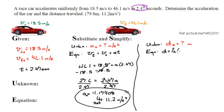I don't know what displacement is, but I do know velocity final is 46.1 plus 18.5. That quantity multiplied by 2.47 seconds, and that whole thing divided by 2.